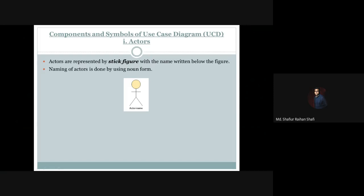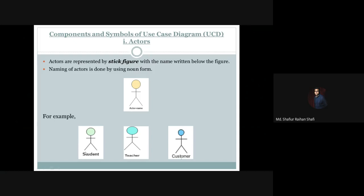Let's take a look at some examples. When naming actors, we always use the noun form. So the naming of actors is done using a noun form. For example, in a student management system or university management system, 'Student' can be an actor, 'Teacher' can be an actor. In any e-commerce related application, 'Customer' can be an actor. Even in a banking system, 'Customer' can be an actor. This is how we represent actors in a use case diagram.